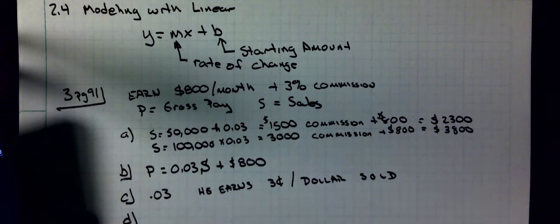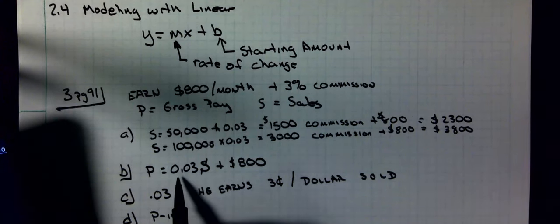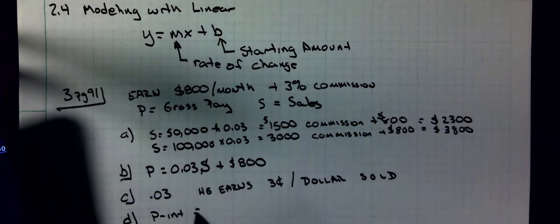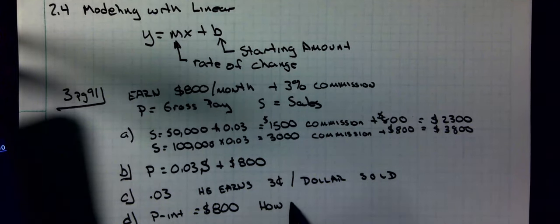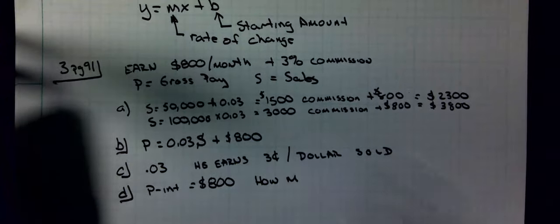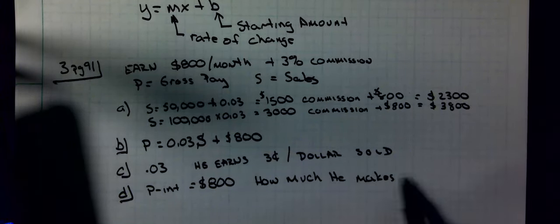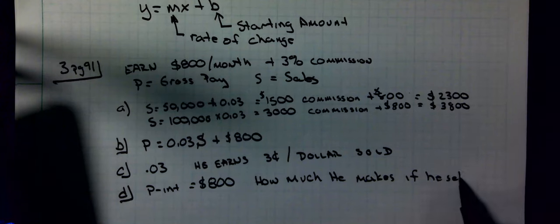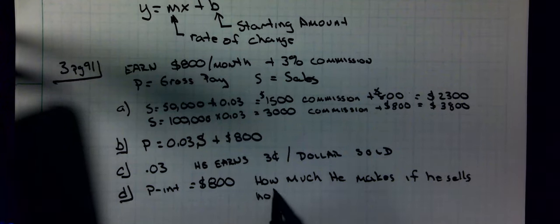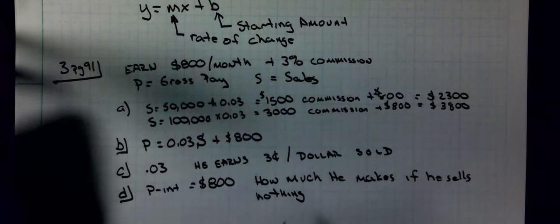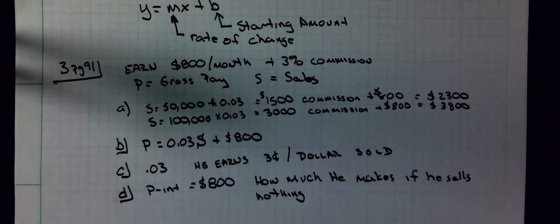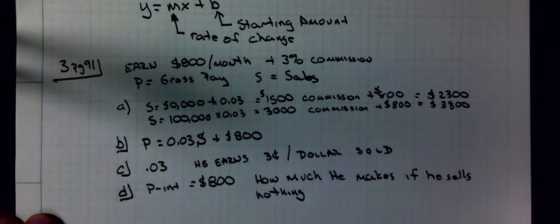What is the P-intercept of the line? It would be 800. The P-intercept at zero for S is 800. What does it represent? How much he makes per month if he sells nothing. That would probably be the only month that he made that amount because if he wasn't selling anything, a commission sales place would probably not keep him.